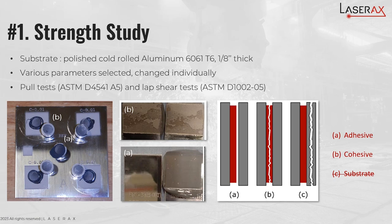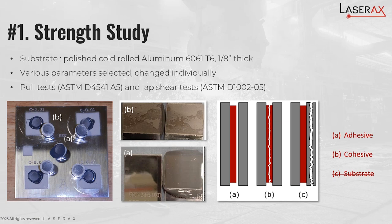These are the parameters that we decided to test. The first one being the pattern — the particularity of laser is that the pattern can be interchangeable. We tested parallel lines, grid pattern, and dots matrix, and concluded that the best one was parallel lines. The best one for us meant very good strength, cohesive rupture of the joint, and also the fastest process possible because we are looking at industrial solutions. We also tested scan speed with four different values, and 35 meters per second was the fastest speed achievable using our optical configuration. The max speed was providing very good joint strength and surface properties, so we decided to keep that one.